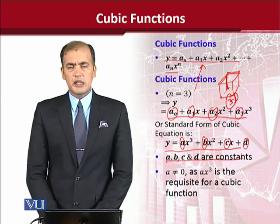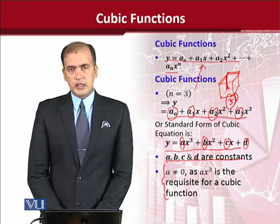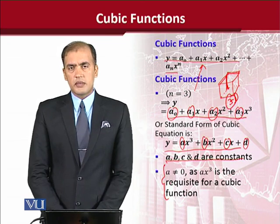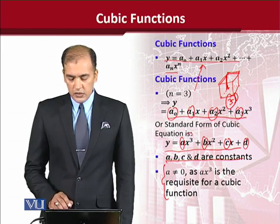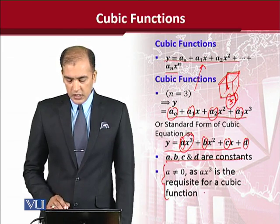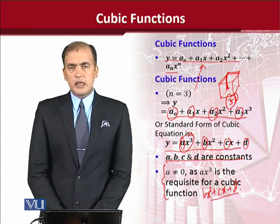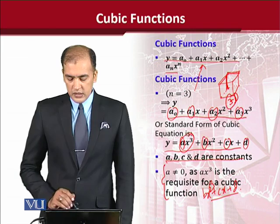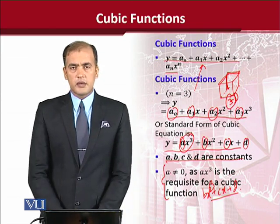These are actually constants — symbolic constants. One of them has a critical restriction: the constant a, which is the coefficient appearing with x cubed. If a equals zero, it reduces that term to zero, and the remaining expression would be bx² + cx + d. We can see that it is not a cubic function anymore — it looks like a quadratic function because the highest power is now two. So we must remember that a must not be equal to zero; it can be negative or positive, but not zero.